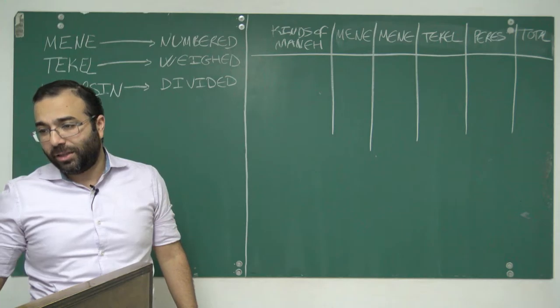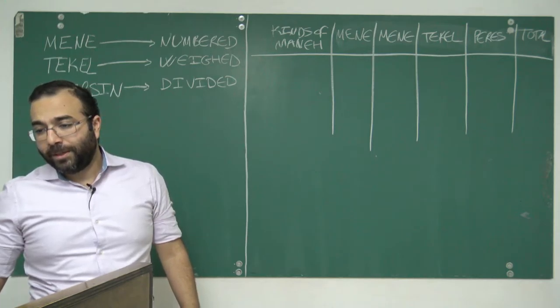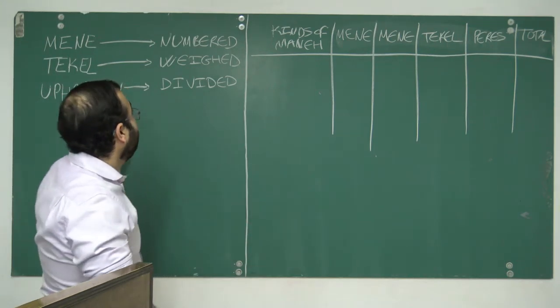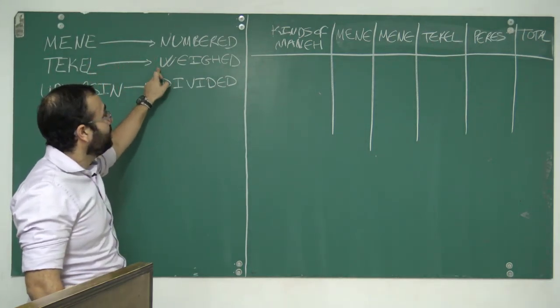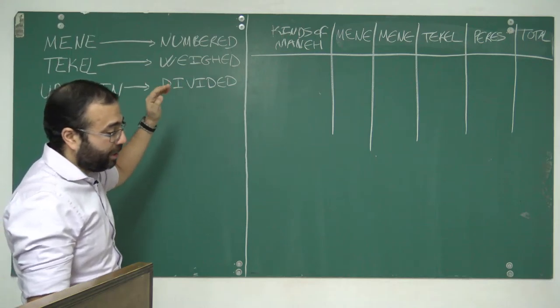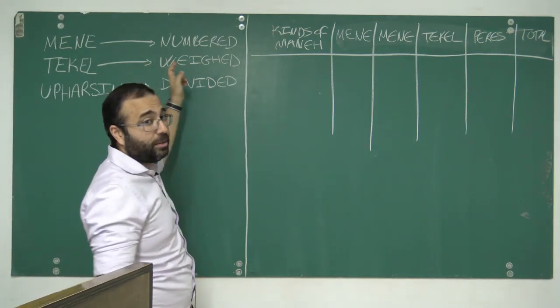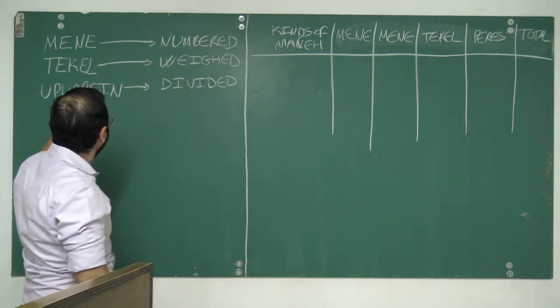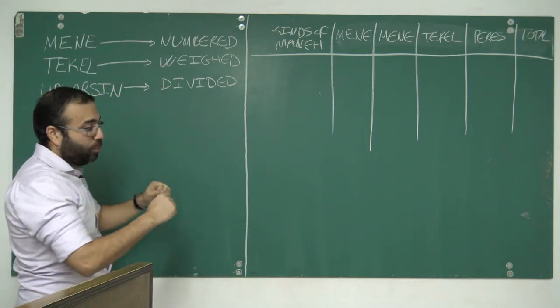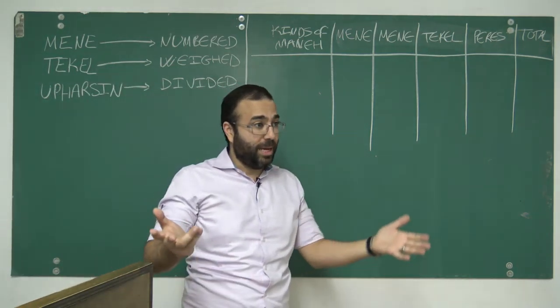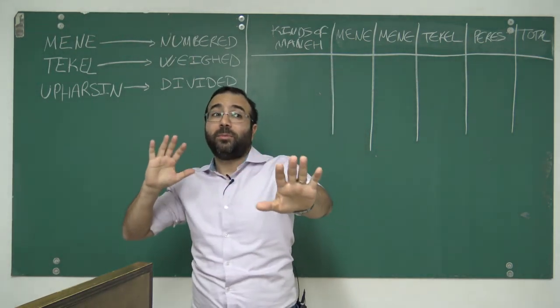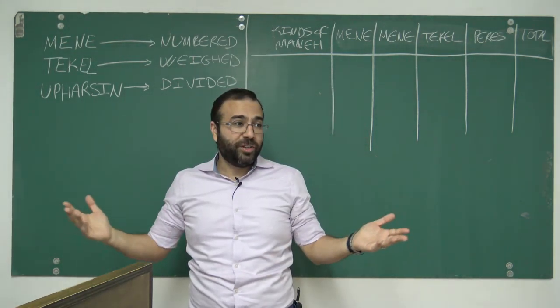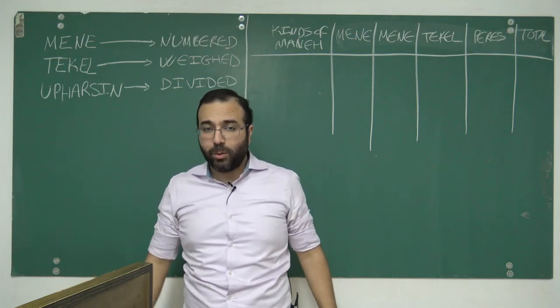We're going to look at the meaning of that sentence that showed up on the wall. Mene is easy—it shows up twice and means numbered. Tekel means weight. Till this day in Arabic, that still means weight, thikl. Upharsin is when you divide—Perez is to divide, like the Pharisees were separating themselves from others.